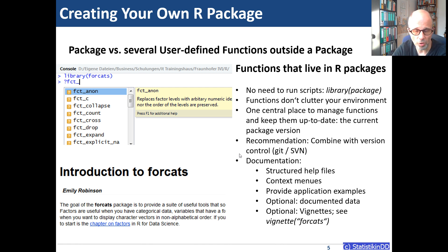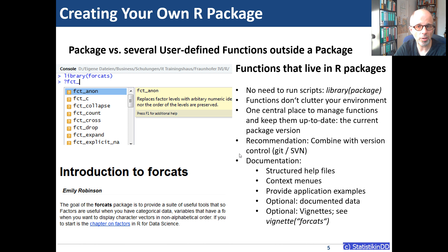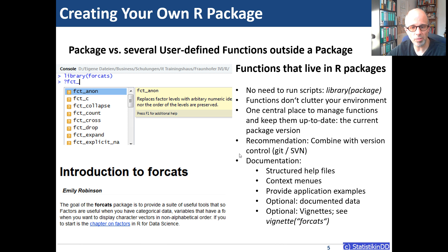If you have an in-house repository in your company, everyone who wants the latest version just installs it from there — you don't need to worry about which project contains the latest version of a function. It's recommended to combine package development with version control; Git is most popular, but SVN is also an option. You can also make use of context menus, as shown in the top left of the screenshot. Many functions in forcats start with 'fct_' to manipulate factor levels — I just typed '?fct_' and all functions with that prefix are listed. You can do that in your own R packages as well.